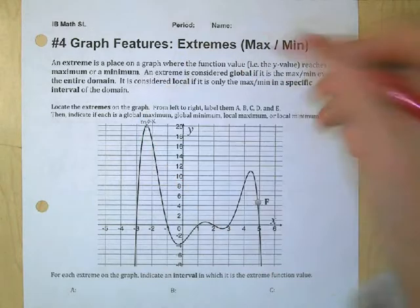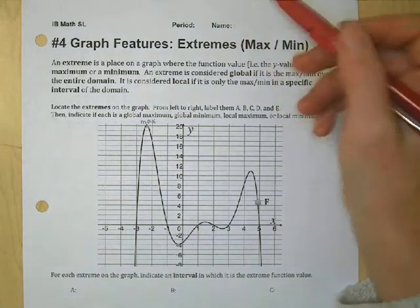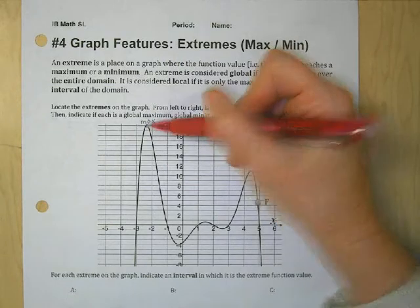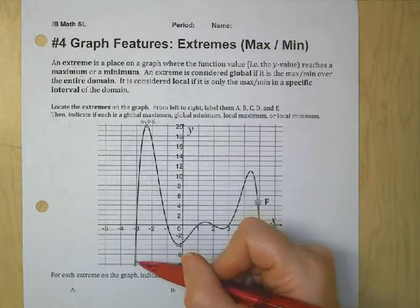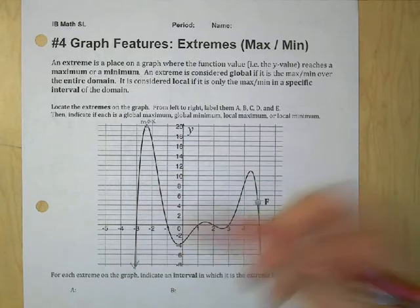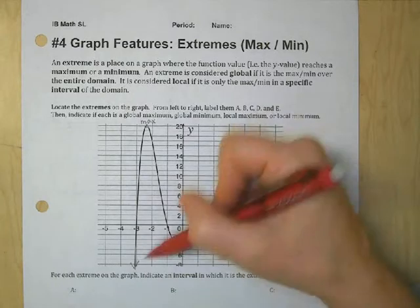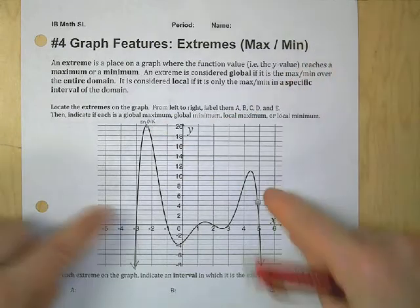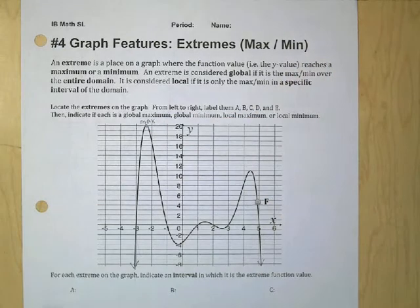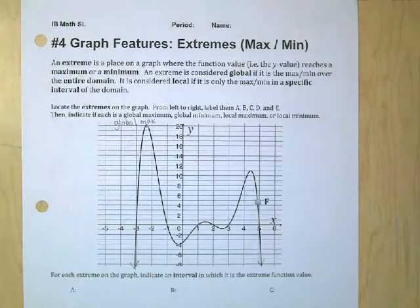And then we have to consider is it global or local? So is it the highest point for the entire graph as far as we can tell? So if we look at this, this implies down here that it's going down forever. And this over here implies that it's going down forever. So this would be a global maximum. There is no point that's going to be higher on this entire graph because these are both going to keep going down. So this would be a global maximum.